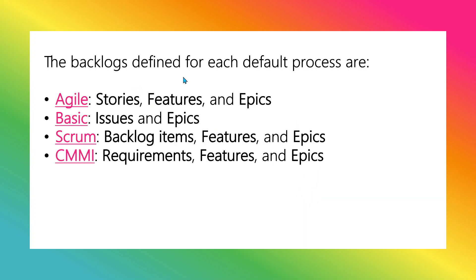Backlogs are defined for each default process. There are different kinds of backlog items defined for each methodology. If you are working on Agile, there are stories, features, and epics. If you are using Basic, it will be issues and epics. If you are working on Scrum, you will have backlog items, features, and epics. If you are working on CMMI methodology, you have requirements, features, and epics. There are also options to customize these.